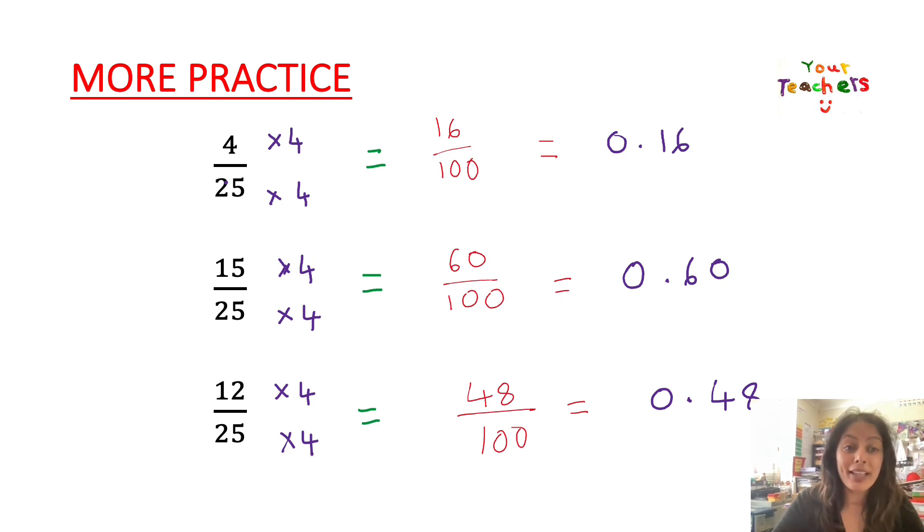And so that's what I'm doing with all of them. Okay, so 16 over 100, 60 over 100, 48 over 100. And look, look how easy it is now to convert these into decimals.